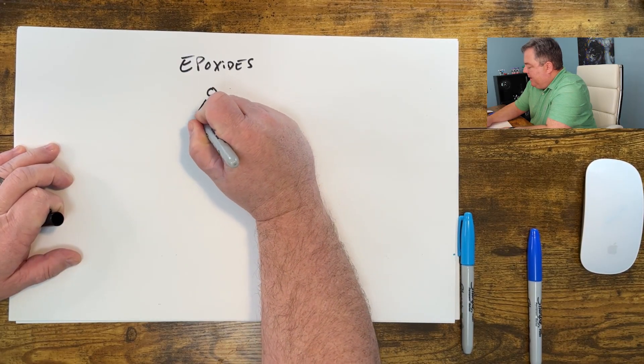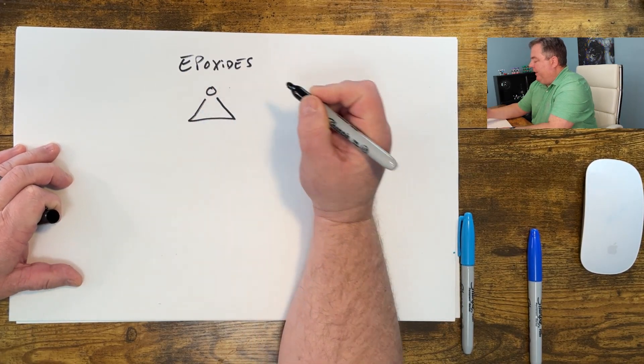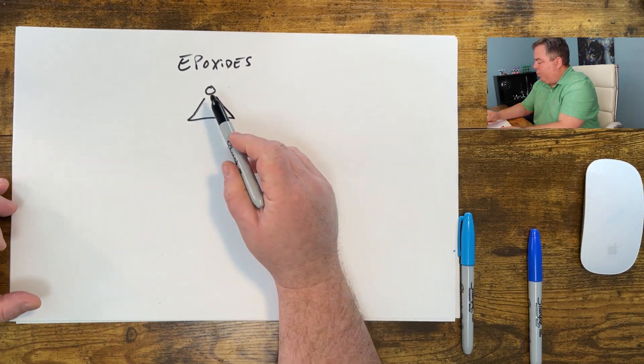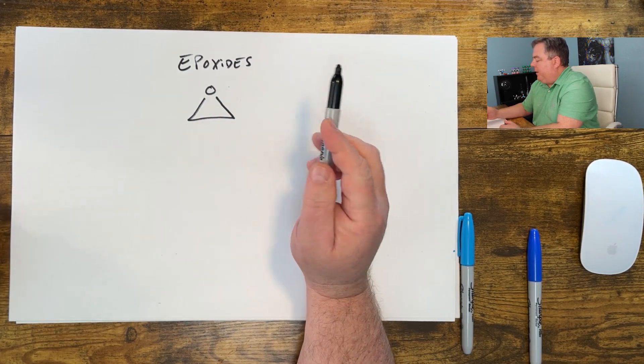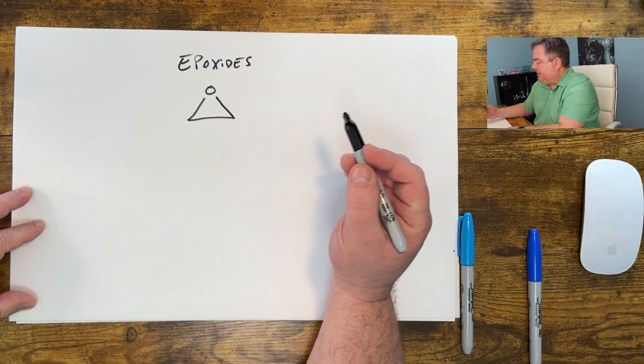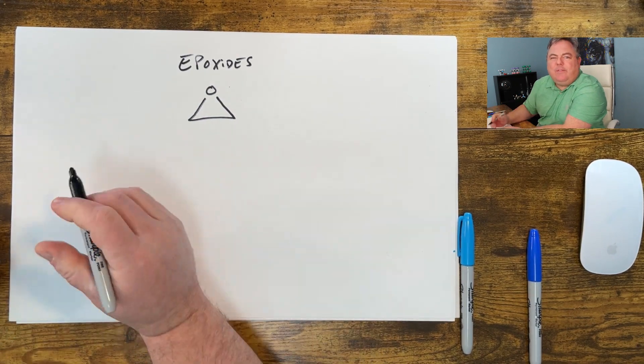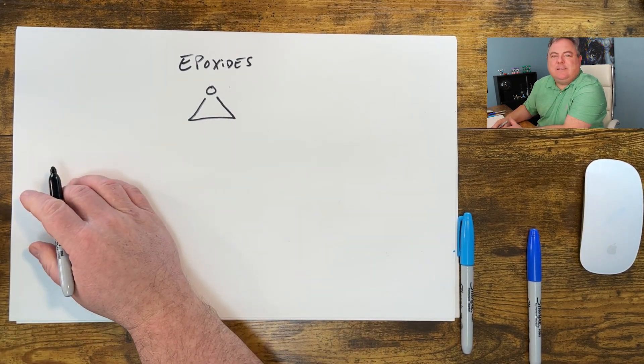Let's take a little time in this video to learn how to name epoxides. Epoxides are small ether rings with three atoms in it. This is an epoxide, and there are three main ways of naming epoxides.